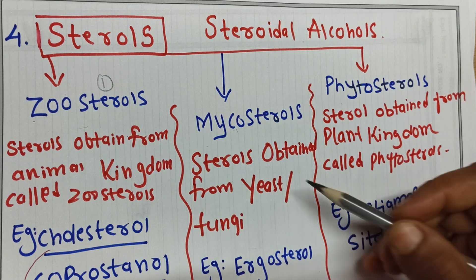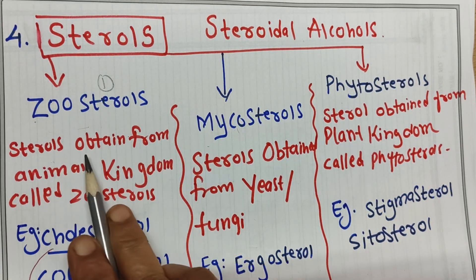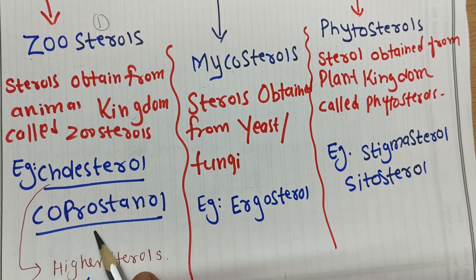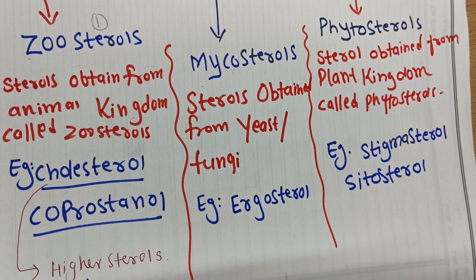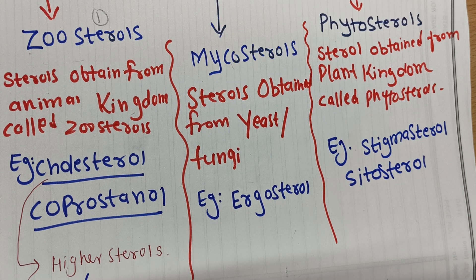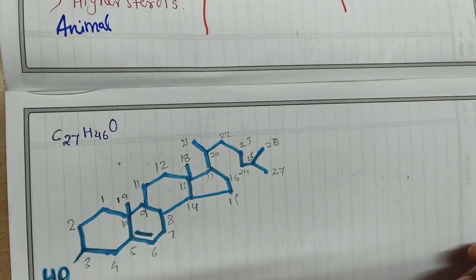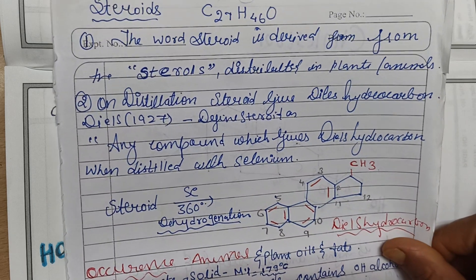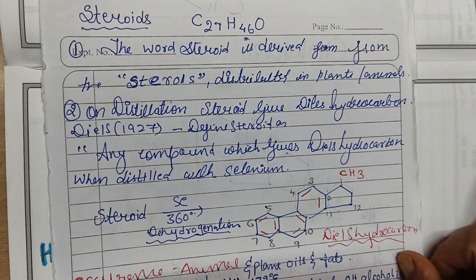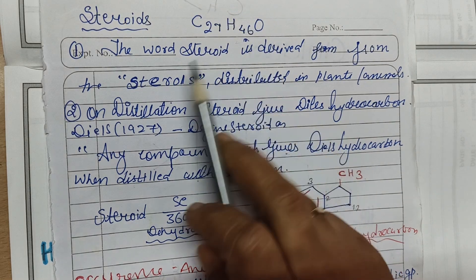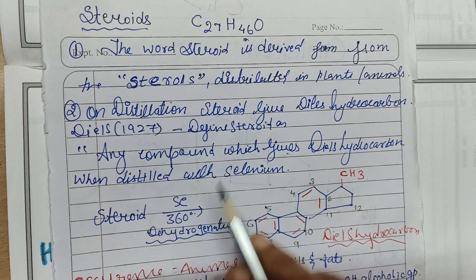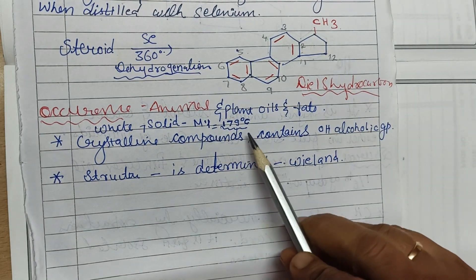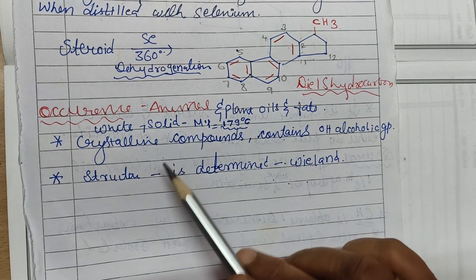Zoosterols are sterols obtained from the animal kingdom. Main examples are cholesterol and coprostenol — these are higher animal sterols. Cholesterol has the molecular formula C27H46O. It is present in animals, plants, oils, and fats. It is a white solid crystalline compound containing an alcoholic -OH group.